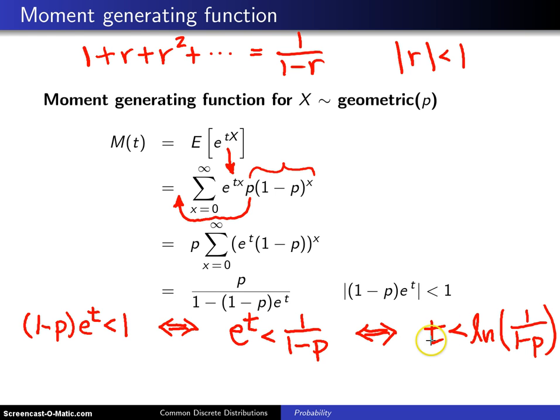Since we have t less than the natural log of some quantity here, which is greater than 1, that means this right-hand side of the inequality is a positive number. So if I want this thing to exist in a neighborhood of 0, all I have to do is choose some positive number that is less than that quantity, just say half of it, and it does exist in a neighborhood about 0.